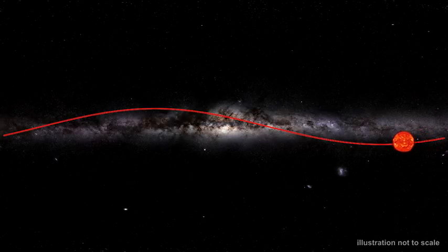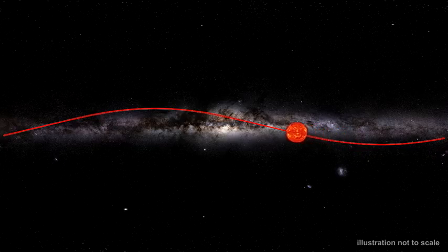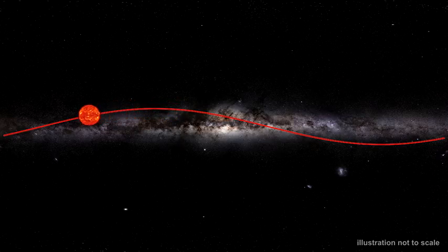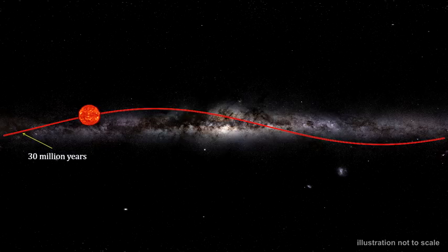Also, as the sun orbits the galaxy, it oscillates up and down relative to the plane of the galaxy, doing this approximately 2.7 times each time around. Astronomers estimate that we are currently at around 75 to 100 light-years above the galactic plane and moving down. This estimate has us crossing the plane again in approximately 30 million years.